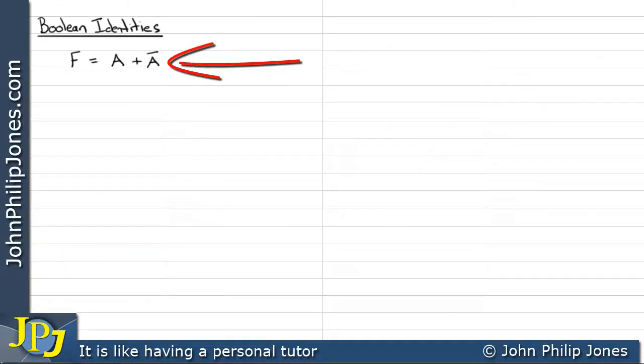Here we can see it says F equals A OR NOT A. Let's remind ourselves of the truth table for an OR gate because this is two variables, A and NOT A, being ORed together.